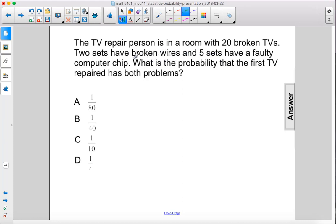We just have to figure out the probability that the TV has the first problem. That would be two favorable outcomes out of 20 total TVs times the probability of the second problem.